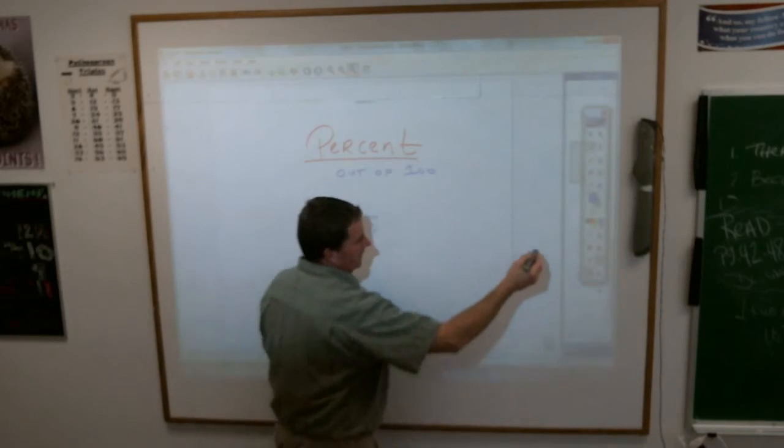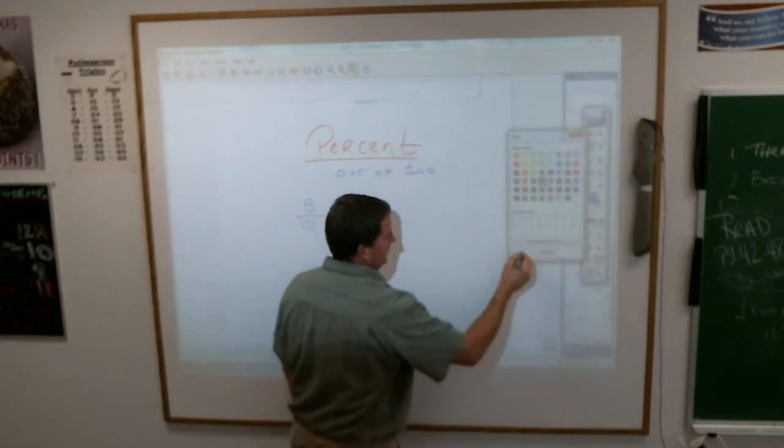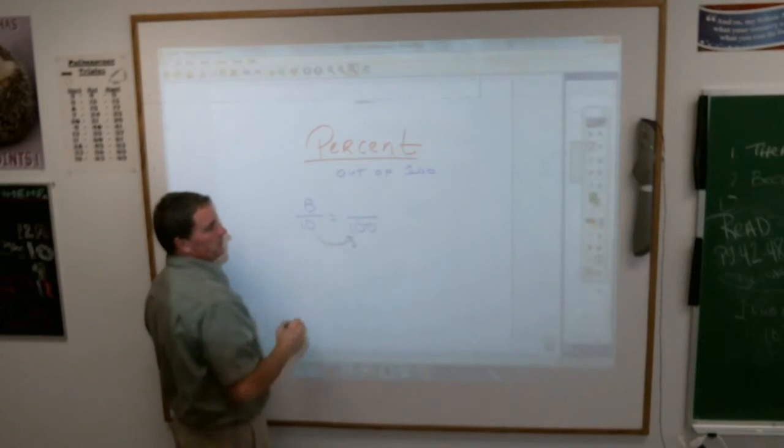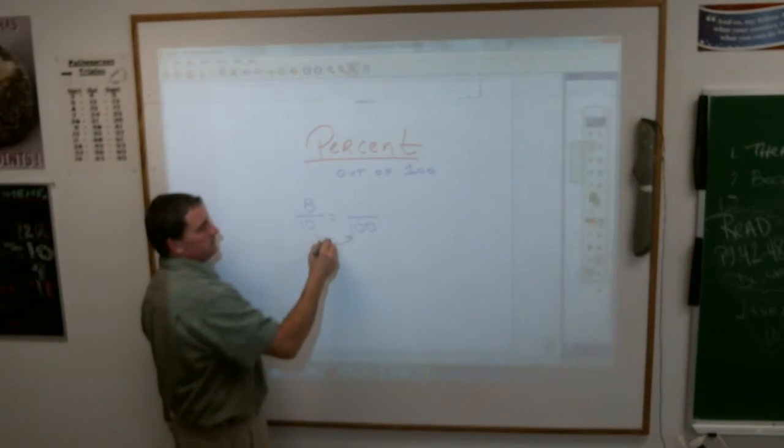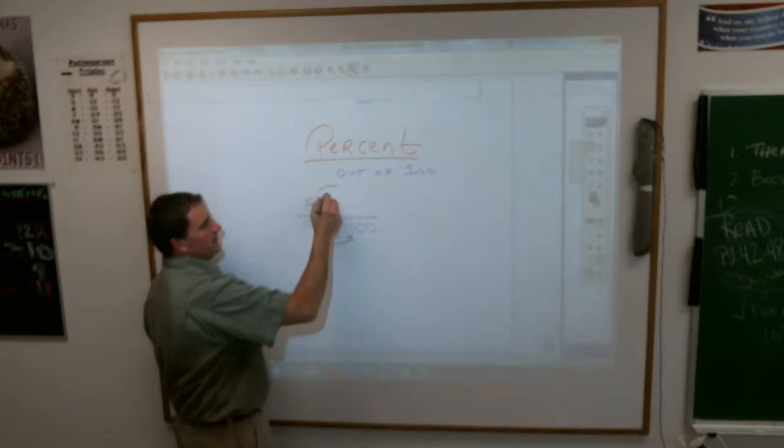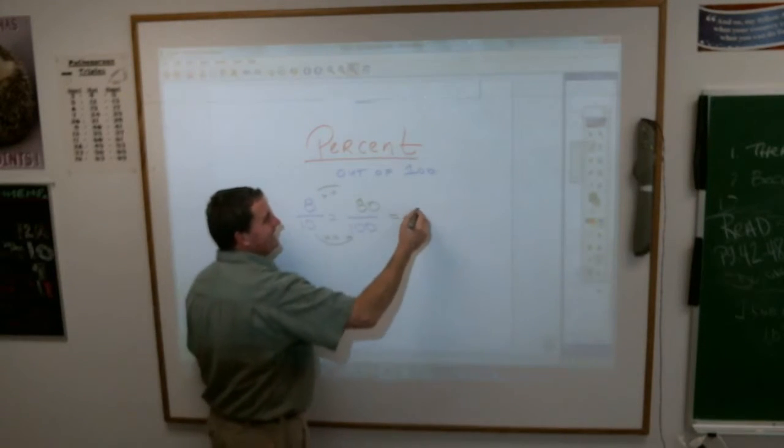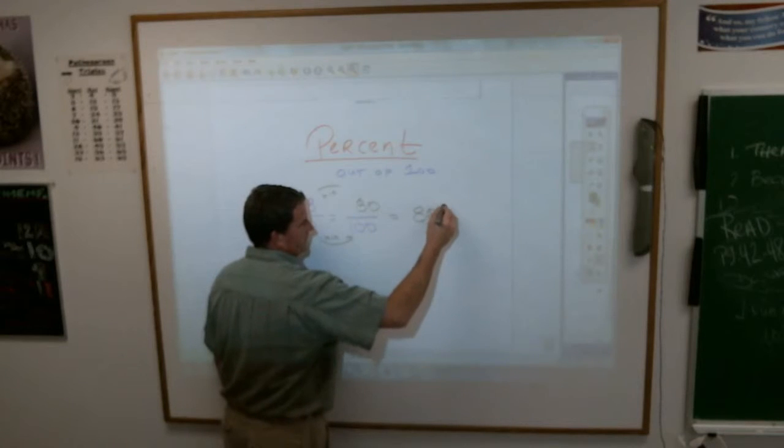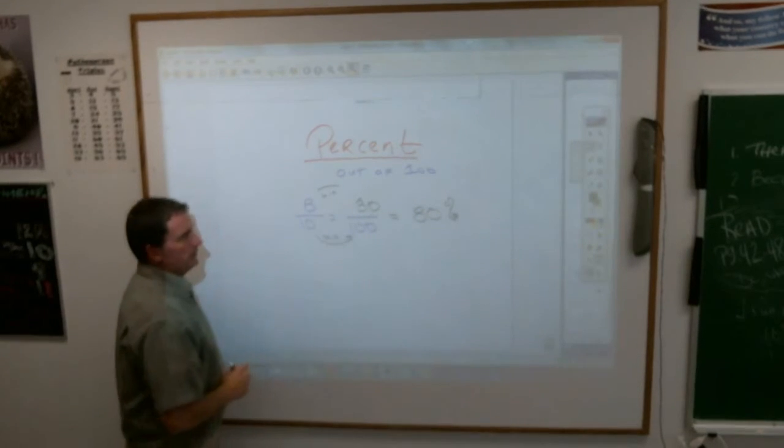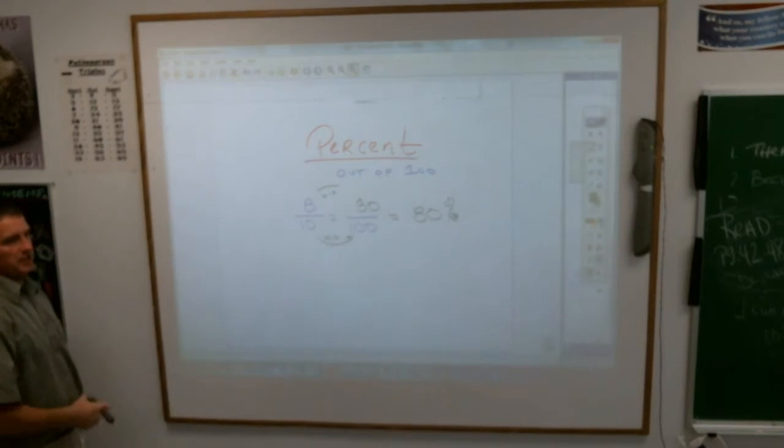Well, one way to find that out is, as you're going to tell me, write this as something with 100 there. Multiply bottom by 10, top by 10, and you end up with what percent? 80 percent. Okay. We don't write it as a fraction of 80 over 100, we just write the top of that 100 there.